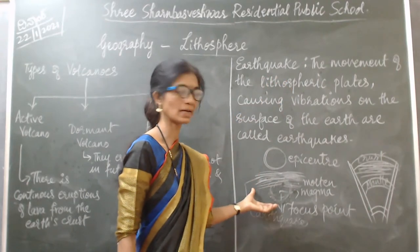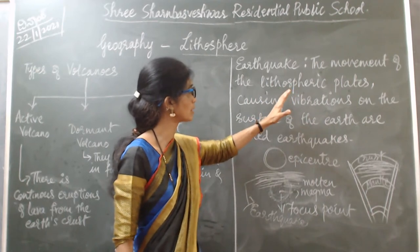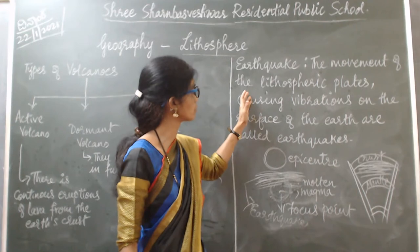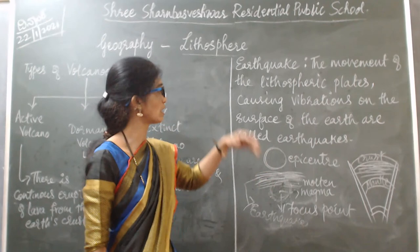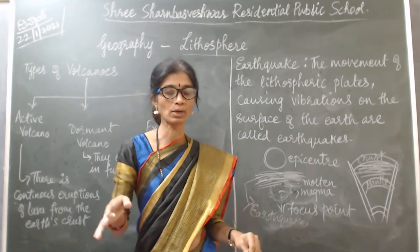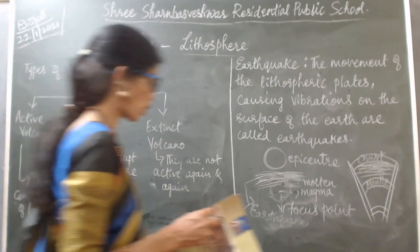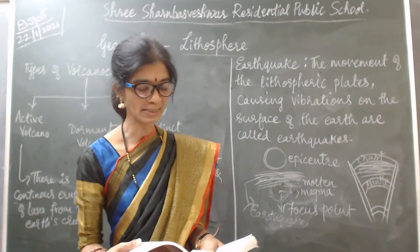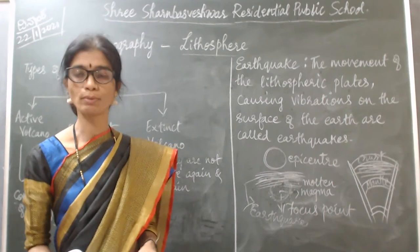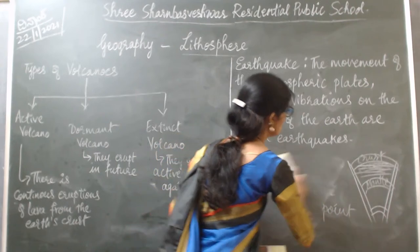Earthquake is the sudden movement on the surface of the earth due to vibrations inside the crust. Earthquakes are formed when the lithospheric plates are imbalanced inside the earth's crust — it causes vibrations and we see sudden movement on the surface. Plants will be moving and we feel emptiness — all that is called an earthquake. The instrument used to record the seismic waves is called the seismograph.